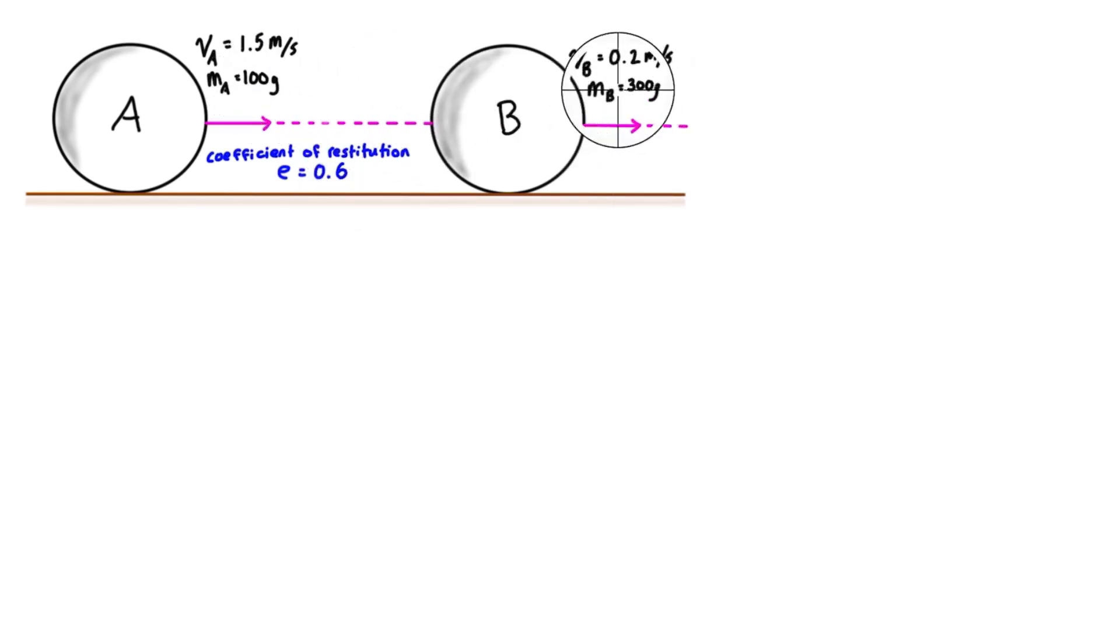The masses are different, 100 grams and 300 grams, and the velocities are different. So to get started, let's write the conservation of momentum equation, which is mA*vA1 plus mB*vB1, so that's the momentum before impact, and we have mA*vA2 plus mB*vB2 for the momentum after impact. So we can fill out a lot of these values.